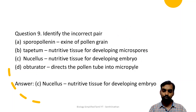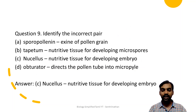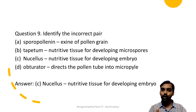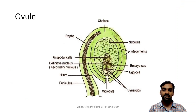Identify the incorrect pair. The nutritive tissue for developing embryo question. Who is the nutritive tissue? The nucellus is the nutritive tissue for the embryo sac - it is pre-fertilization tissue. The ovule contains the embryo sac. After fertilization, the ovule becomes the seed, and the endosperm is the nutritive tissue for the embryo. The nucellus in the ovule structure is a nutritive tissue for the embryo sac.